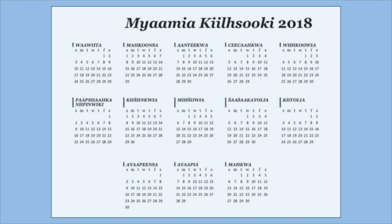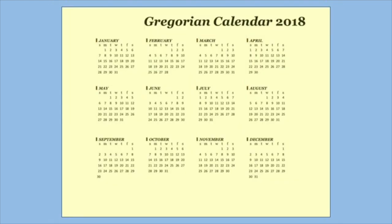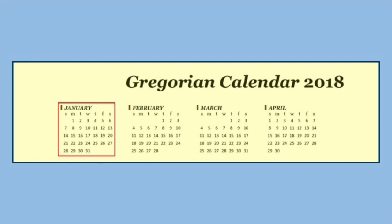Another major difference from a typical calendar is that Myaamia Kilsuke is a lunar calendar. A lunar year is 354 days long, which is 11 days shorter than the solar year. Your typical calendar, or Gregorian calendar, is solar-based and normally 365 days long. On the Gregorian calendar, each month has a set number of days.